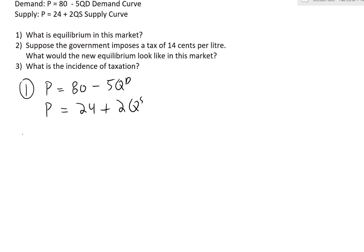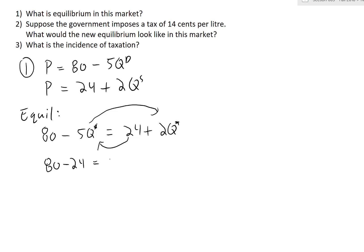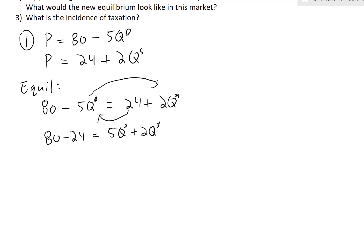Scrolling down to solve: at equilibrium we set them equal — 80 minus 5QD equals 24 plus 2QS. Since we're invoking the equilibrium condition, QS and QD both become Q star. Rearranging: 80 minus 24 equals 5Q star plus 2Q star, which gives us 56 equals 7Q star, so Q star equals 8.